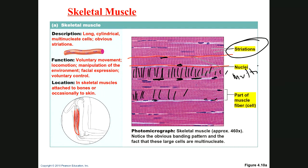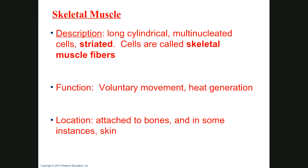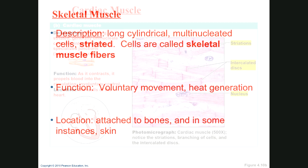Skeletal muscle functions include voluntary movement of muscles and skin, and heat generation. This is one of the tissues involved in creating heat when we are under hypothermia — for example, shivering. It is attached to bones and skin.